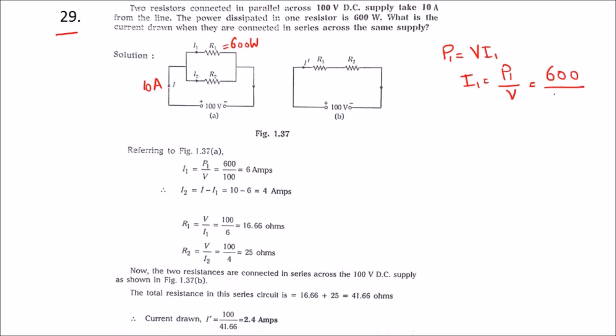So we will get 6 amps. Once we get I1, I2 we can easily get by substituting in this formula, that is 10 minus 6. So I2 is 4 amps. We got I1 and I2.